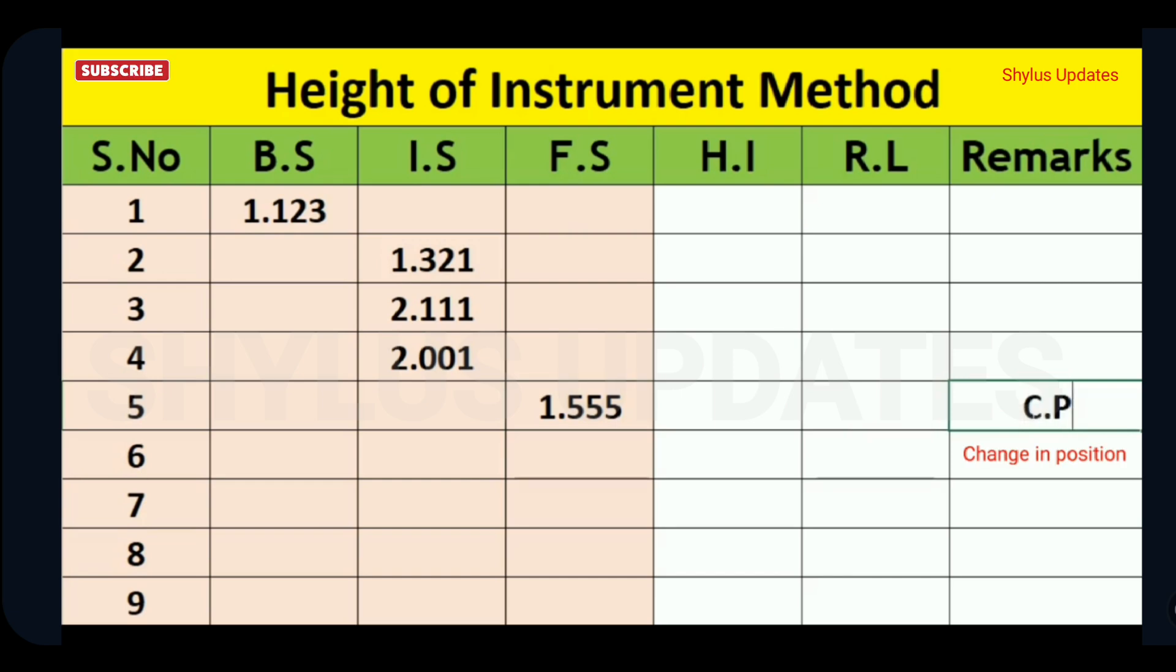After this, 6th reading 1.522 should be entered in back site BS. Next readings can be entered in intermediate site IS. Last reading 1.911 should be entered in fore site FS. Remember that leveling survey always starts with back site BS and ends with fore site FS.